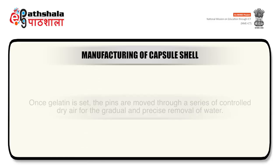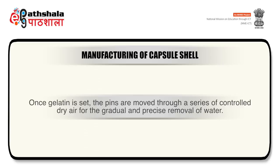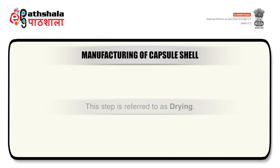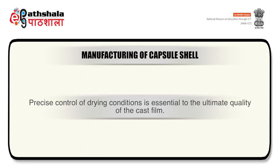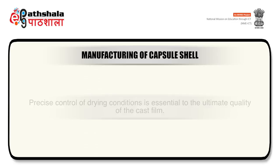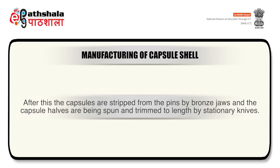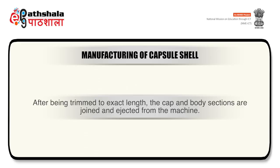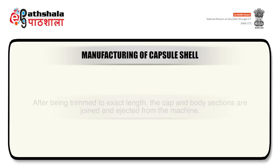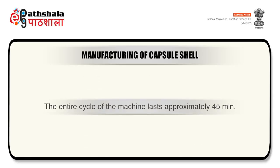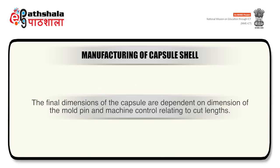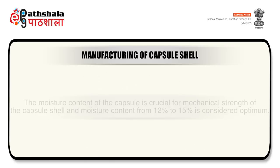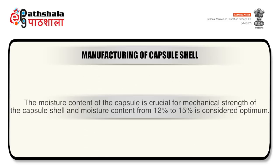Once gelatin is set, the pins are moved through a series of controlled dry air stations for gradual and precise removal of water — this step is referred to as drying. Precise control of drying conditions is essential to the ultimate quality of the cast film. After this, capsules are stripped from the pins by bronze jaws, and capsule halves are spun and trimmed to length by stationary knives — these steps are referred to as stripping and trimming. After being trimmed to exact length, the cap and body sections are joined and ejected from the machine. The entire machine cycle lasts approximately 45 minutes.